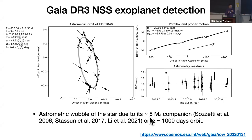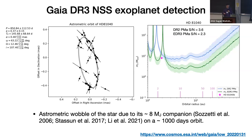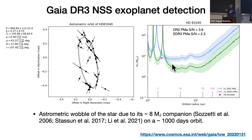The 1,000-day period of HD 81040 b is at the interface where the sensitivity of our proper motion anomaly technique decreases significantly. However, we can detect this planet in terms of proper motion anomaly in Gaia DR2, and the actual planet properties are compatible. In DR3, which is based on a longer three-year time window instead of approximately two years, we have decreased sensitivity due to increased smearing, making it more difficult to detect the planet from DR3 than from DR2 in this particular case.